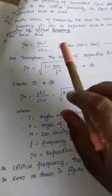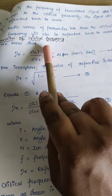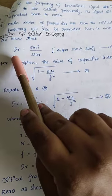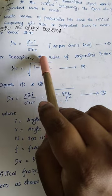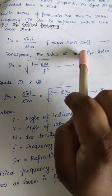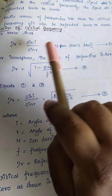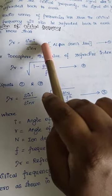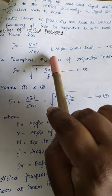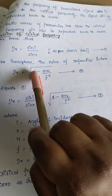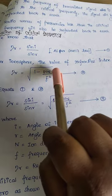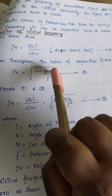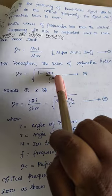Let us now derive the expression for critical frequency. We know from Snell's law that the refractive index eta_r is equal to sin(i) / sin(r). For the ionosphere, the value of the refractive index eta_r is equal to the square root of 1 minus 81n divided by f squared.